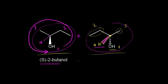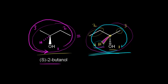But if you don't want to rotate the molecule in your head, there's a trick you can use. Just start with the drawing as given, number your groups by priority, and ignore the hydrogen for the moment even though it's coming out at you. Look at one, two, three — they go clockwise, which looks like R. But since the hydrogen is coming out at us in space on a wedge, we take the opposite. So if it looks R and the hydrogen is coming out in space, you know it's actually the S enantiomer. Just assign priorities, determine R or S, then take the opposite.